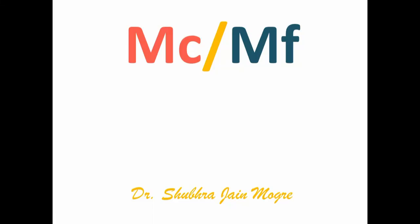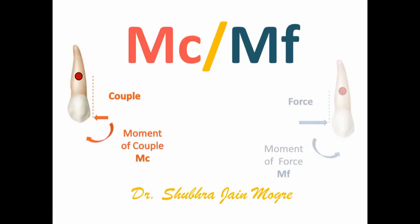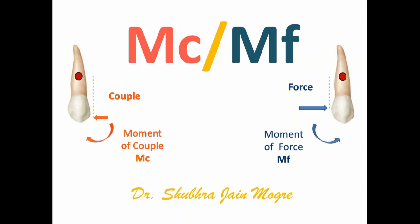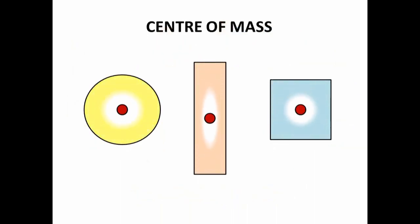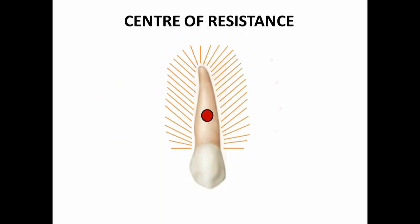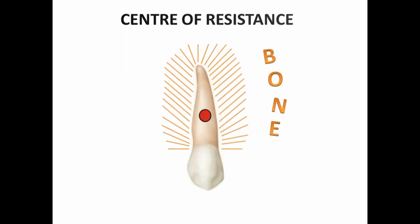Hi there. In this video I am going to talk about how the ratio of moment of couple to moment of force affects tooth movement. Let's understand a few common terms. Centre of mass is the point where the whole mass of a free body can be thought to be concentrated. The term centre of resistance is used for a restrained body like a tooth.